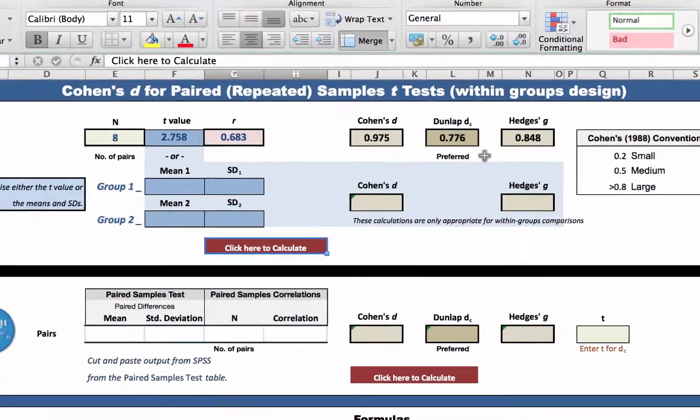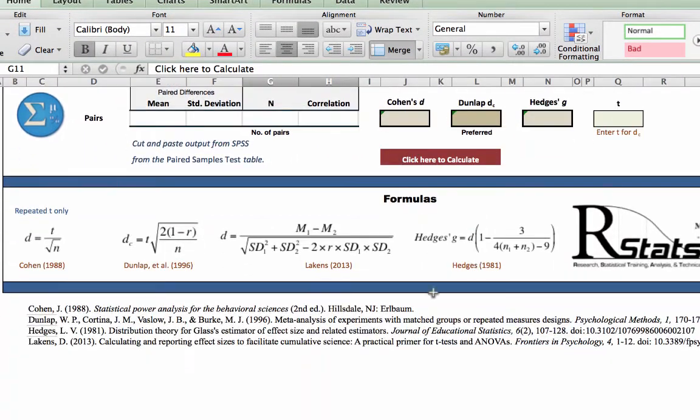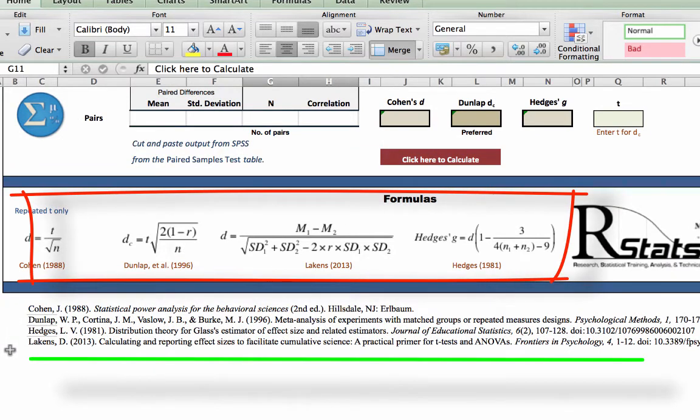The reference for Cohen's effect size and its interpretation, Hedges' G, and the formulas that I used, are below the table.